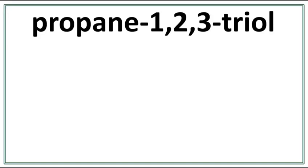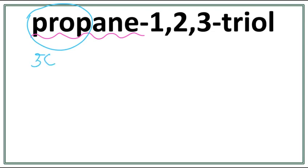Let's draw the structure for propane-1,2,3-triol. This is an alcohol, and propane is the name of the parent chain. 'Prop' tells us that there are three carbons in the longest carbon chain. 'Ane' tells us that there are only single bonds present between the carbons in the parent chain.